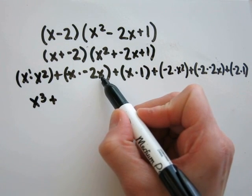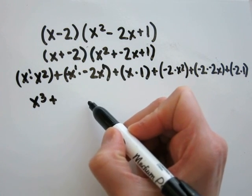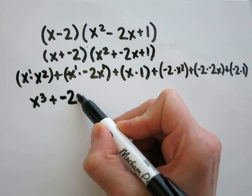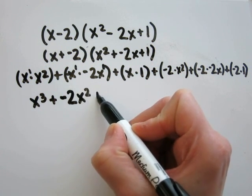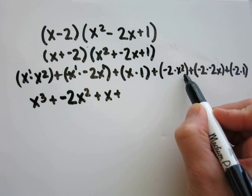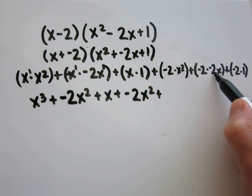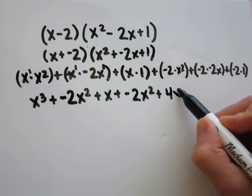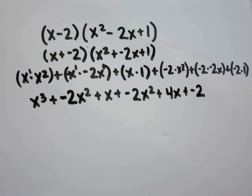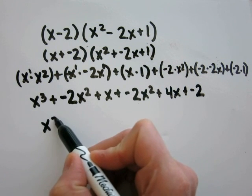x times negative 2x — again, the same base of x, this is x to the 1st power, add the exponents, 1 plus 1 is 2 — so you have negative 2x squared. x times 1 is x. Negative 2 times x squared gives negative 2x squared. Negative 2 times negative 2x is positive 4x. Negative 2 times 1 is negative 2. Now combine like terms. This is the only x to the 3rd power I have, so carry that down.